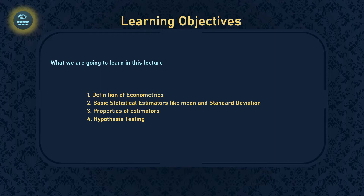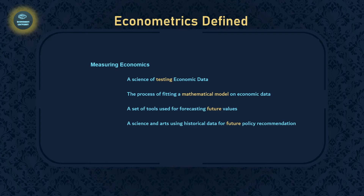Our learning objectives in lecture 1 are: first, to define econometrics; then, in subsequent videos, we will discuss basic statistical estimators like the arithmetic mean, median, mode, and standard deviation; the properties of estimators used in econometrics; and finally, hypothesis testing and its importance. Let us start with the definition of econometrics, which simply means measuring economics.